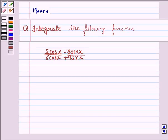Hello and welcome to the session. Let us discuss the following question. Integrate the following function: 2cosx minus 3sinx upon 6cosx plus 4sinx.